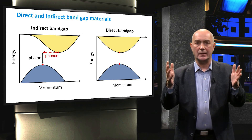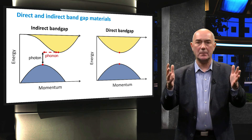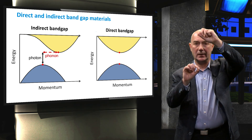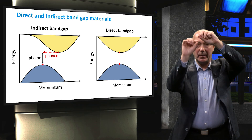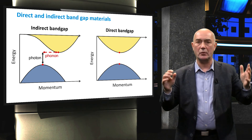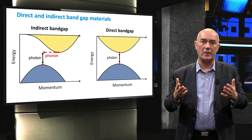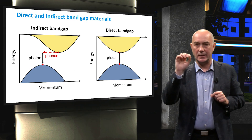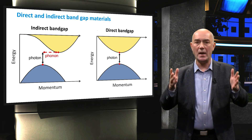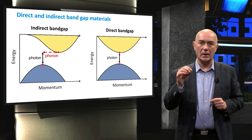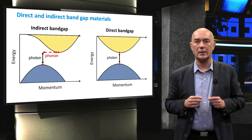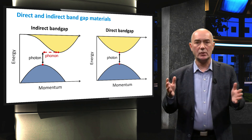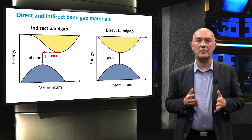In contrast, in the energy-momentum space, a direct band gap has the highest point of the valence band vertically aligned with the lowest point of the conduction band. Exciting an electron from the valence band to the conduction band, therefore, requires only the energy provided by a photon without any additional momentum transfer. This means that the excitation of an electron induced by a photon absorption is more likely to happen in direct band gap materials than in indirect band gap materials.